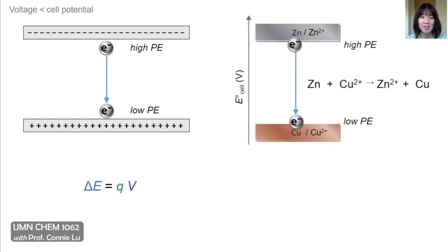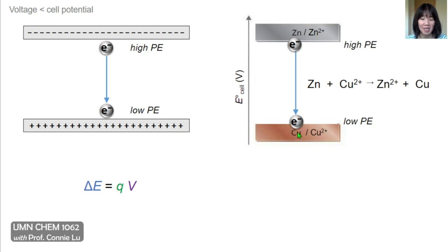In the voltaic cell, electrons also move spontaneously from high potential energy to low potential energy across two metal electrodes. The voltage difference between these two metal electrodes is called the cell potential.